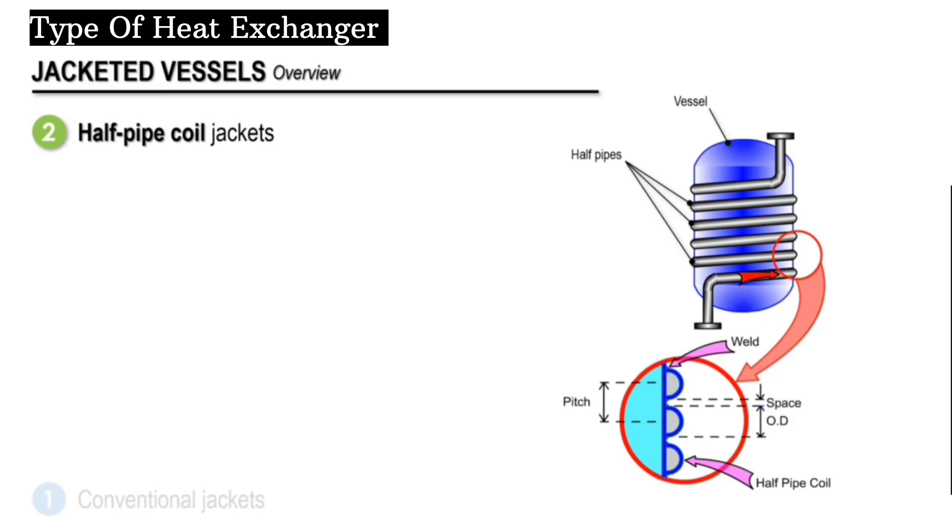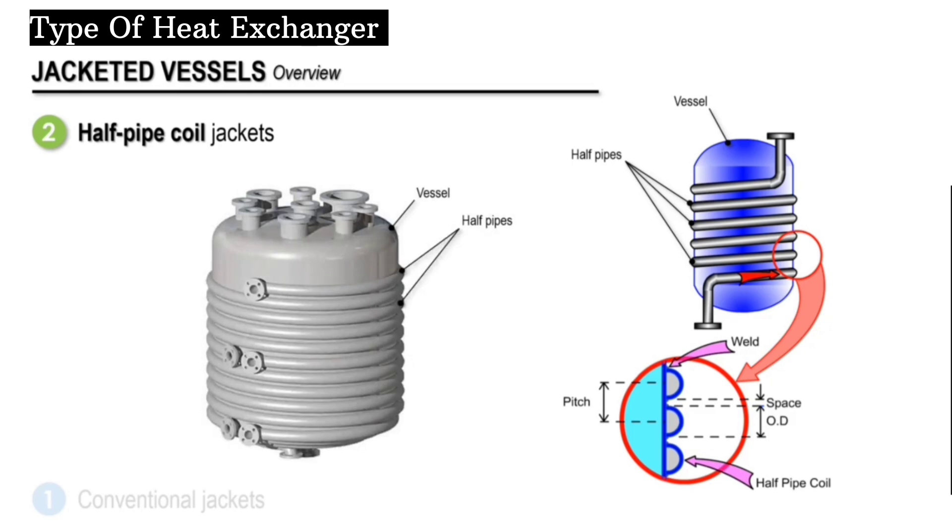Now, in some arrangements, the jacket can be divided into multiple zones for maximum flexibility and efficiency, as depicted in this example where you can see two heat transfer zones, zone 1 and zone 2.